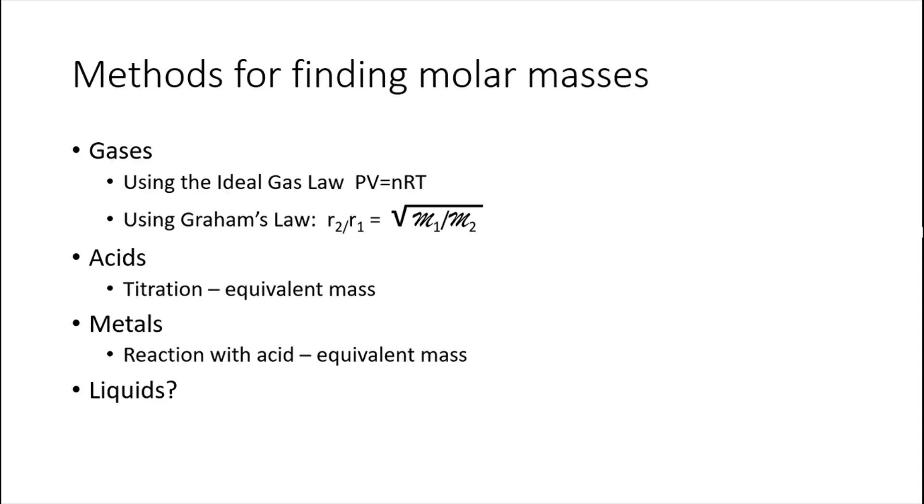We have studied several methods for finding the molar masses of different kinds of substances. We found that by having the molar mass in conjunction with the composition analysis of a compound, we can derive what its chemical formula is. For gases, if we have a known mass occupying a certain volume at a certain pressure and temperature, we can use the ideal gas law to calculate the molar mass of this gas.